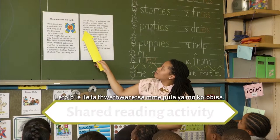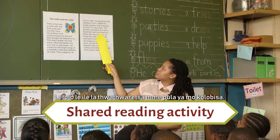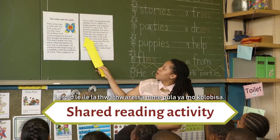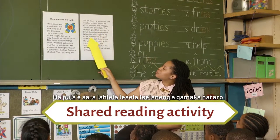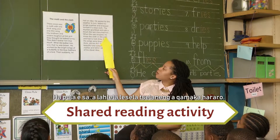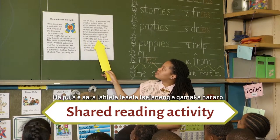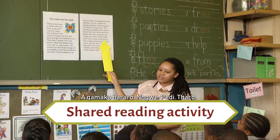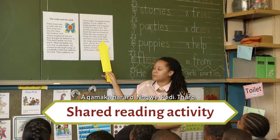The thunder grumbled and with a drum the rain drenched him. When the rain stopped he threw the cloth on the path and he had to look three times. He looked three times.